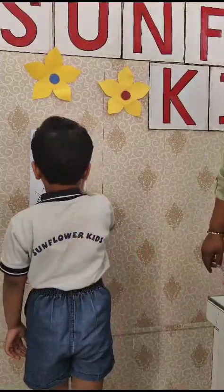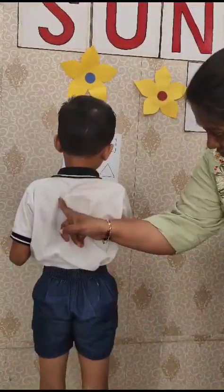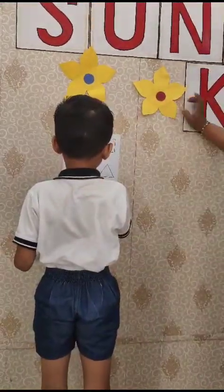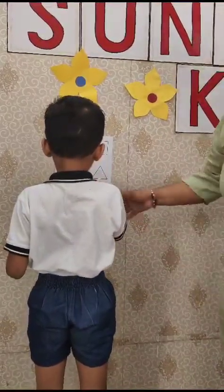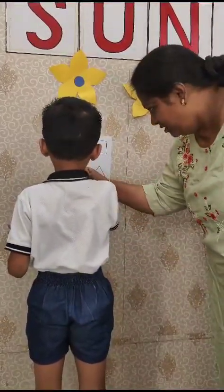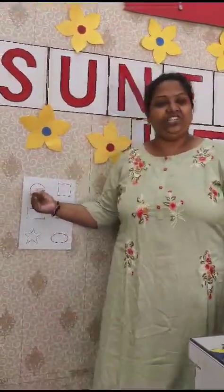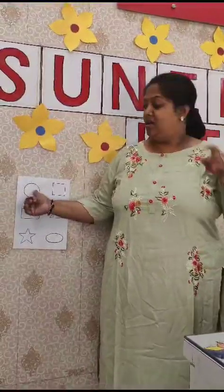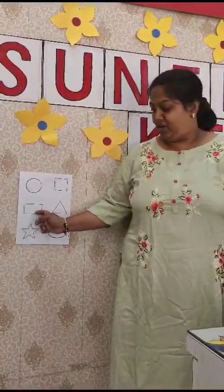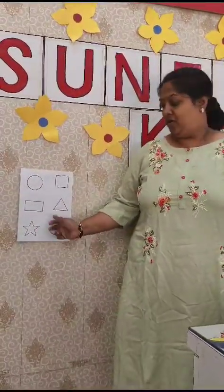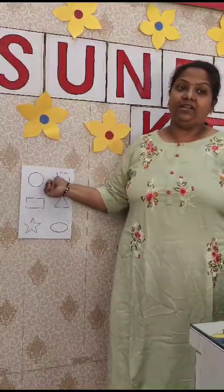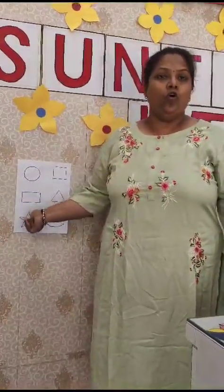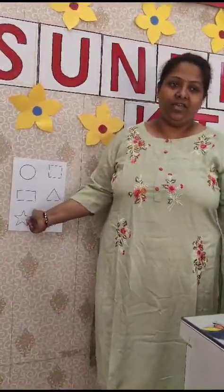Which shape? Circle. Okay, so now we get to know the shapes by using our brain — circle, rectangle, star, oval, triangle, and square. You will practice the same thing at home with your parents. Okay? Bye.